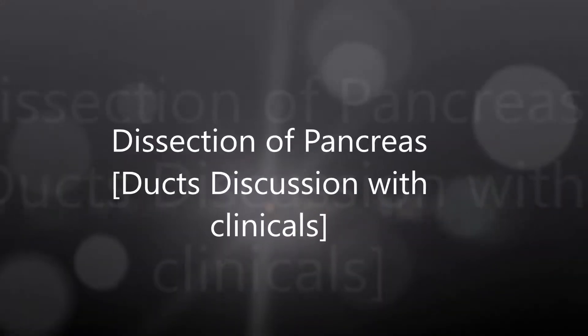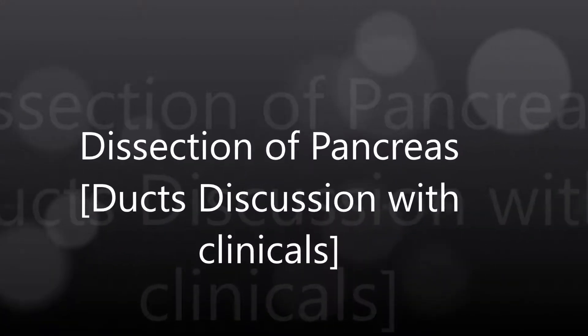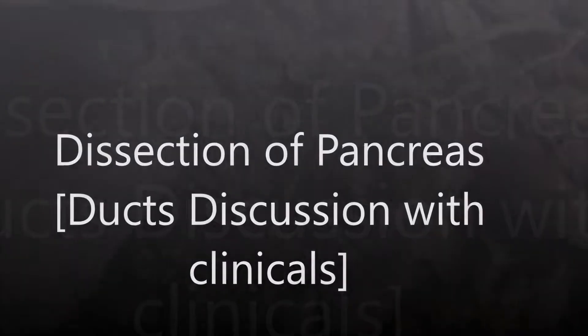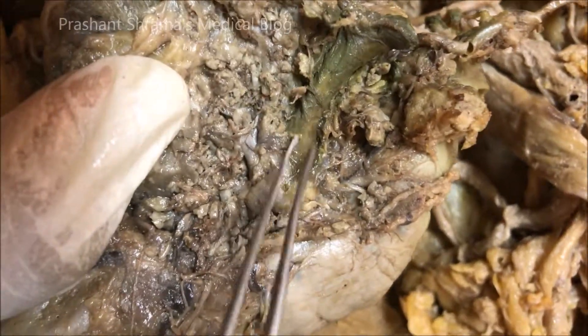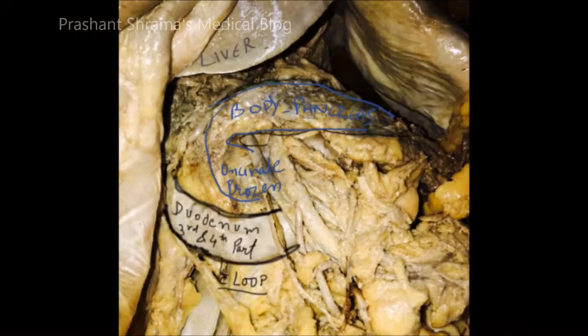Hello friends, today we are going to see about the dissection of pancreas, the head area and uncinate area. Here you can see the common bile duct after the dissection of the lobulated area, and you can orient yourself in this picture.